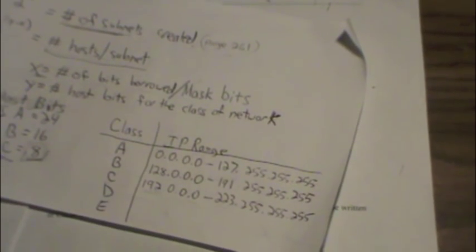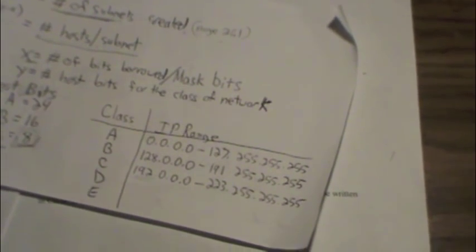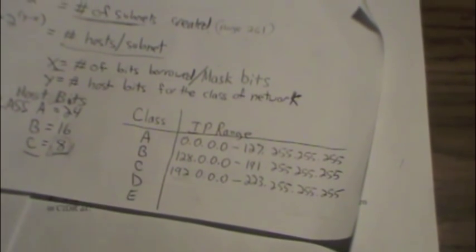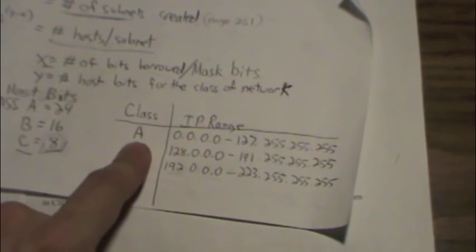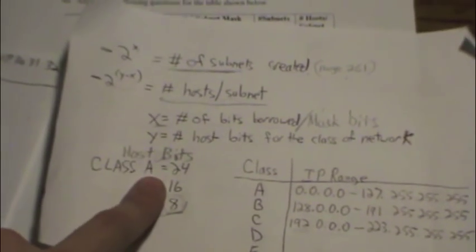Alright, we're still working on number 46 here, working our way down the table. This is in the 10 range, and if we look at our classes, 10 falls within the Class A network. But not to worry because we solve it the exact same way. With Class A we already know what the y value is, which is the number of host bits, which is 24.